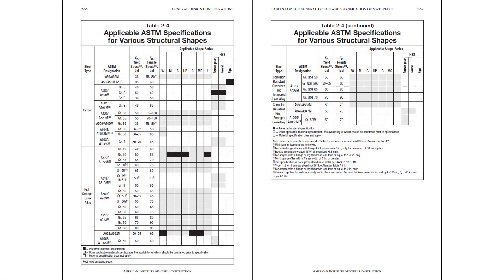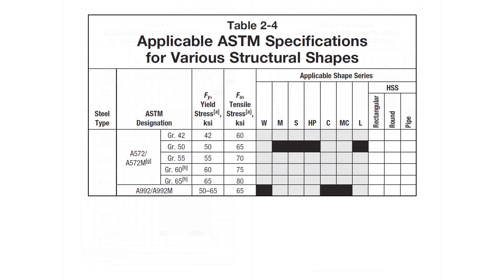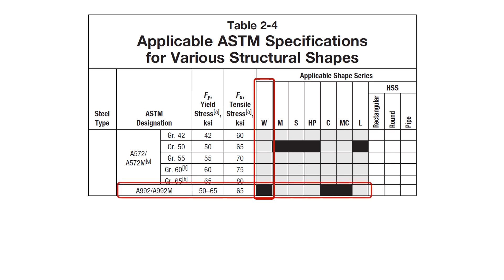To determine the yield strength used in these calculations, we look at Table 2-4 out of the 16th edition of the AISC Steel Construction Manual. Zooming in, you can see that for a W shape the preferred material is A992, and the yield strength F sub y is 50 ksi and the tensile stress F sub u is 65 ksi.